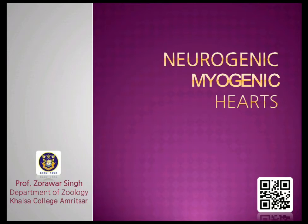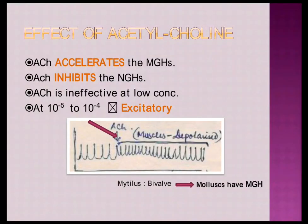After neurogenic hearts, we discussed the myogenic heart of mammals and the pacemaking system involving the SA node, AV node, bundle of His, its branches, and the Purkinje fibers. Every part of the pacemaking system has its own impulse generation mechanism at different rates. We also discussed some part of the ECG curve and how it is formed, then started with the effect of acetylcholine on both myogenic and neurogenic hearts.